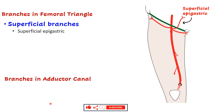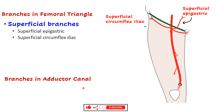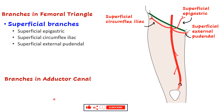There are three superficial branches given in the femoral triangle. The first is the superficial epigastric, which runs along the anterior abdominal wall towards the umbilicus. The second is the superficial circumflex iliac, running just below the inguinal ligament towards the anterior superior iliac spine. The third is the superficial external pudendal, which runs medially towards and supplies the external genitalia.